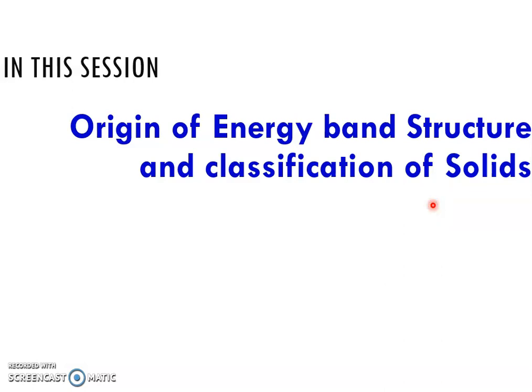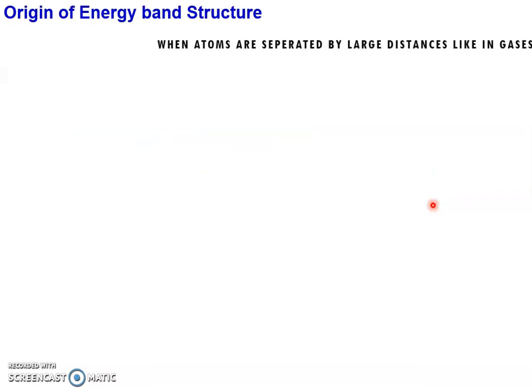Good morning, dear students. In this session we are going to discuss about the origin of energy band structure and classification of solids. Before going to that, we have to understand about the atom. An atom consists of a nucleus surrounded by electronic energy levels. If you take an atom separately, all these electronic energy levels are discrete and sharp energy levels, and these energy levels are tightly bounded.